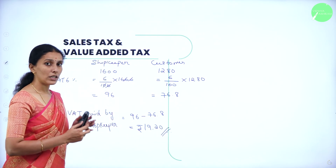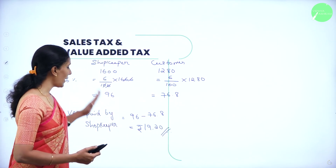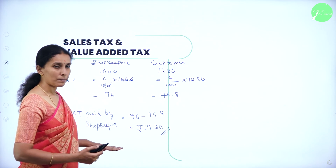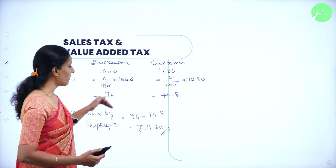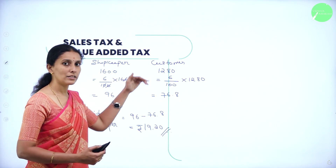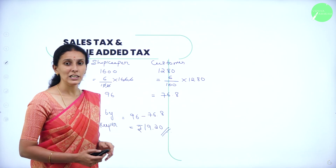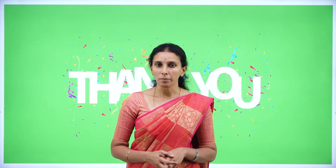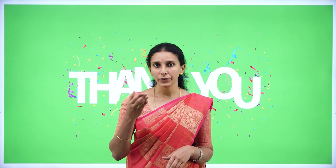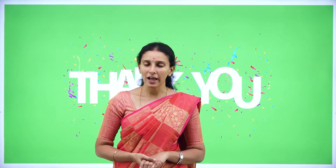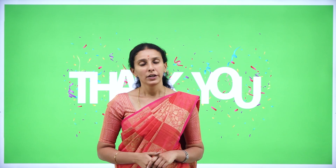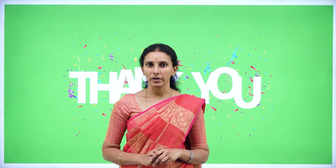Whenever you have a discount, the VAT paid by the shopkeeper is always equal to the VAT paid by him minus the VAT paid by the customer. In today's session we solved problems on value added tax, completing the chapter on sales tax and value added tax. We'll meet in the next session — until then, keep watching, keep learning, keep exploring. Thank you.